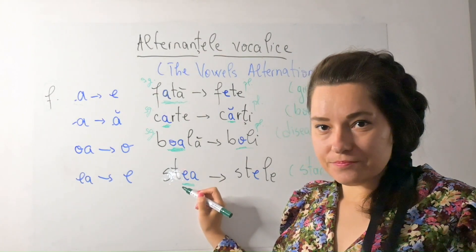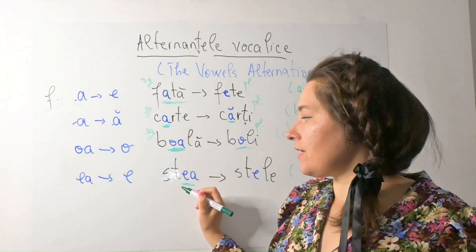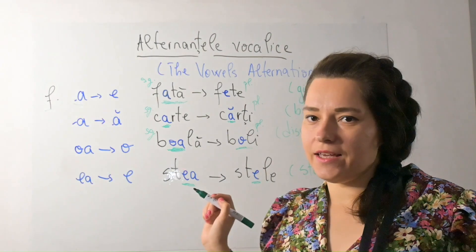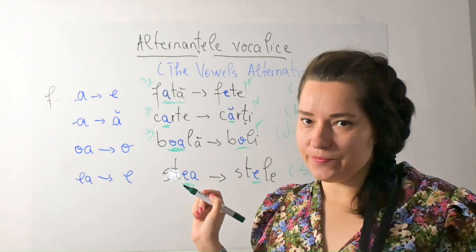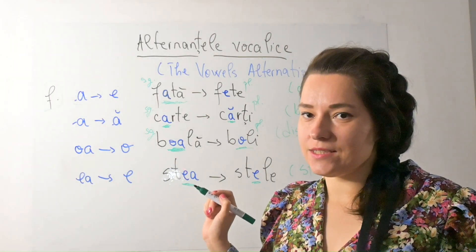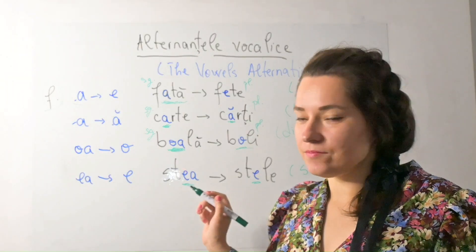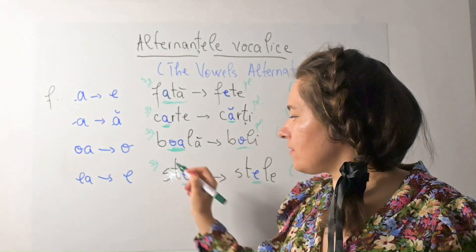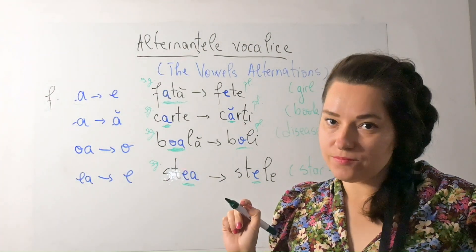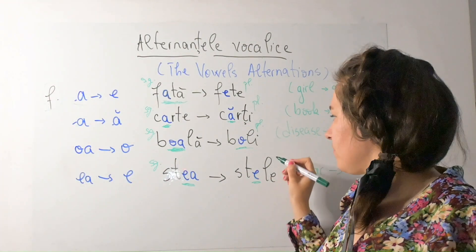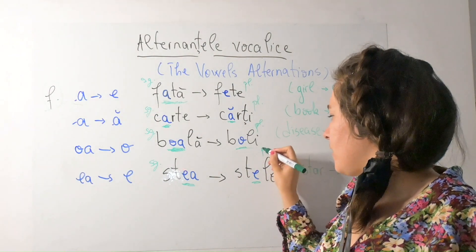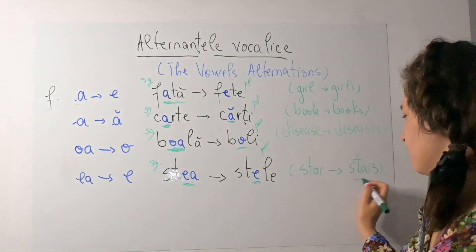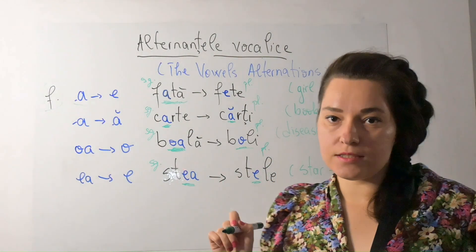'Ea' changes into 'e'. De exemplu: stea (singular) → stele (plural). A star, stars.